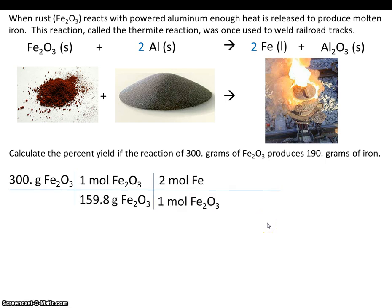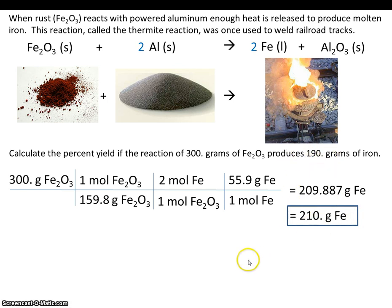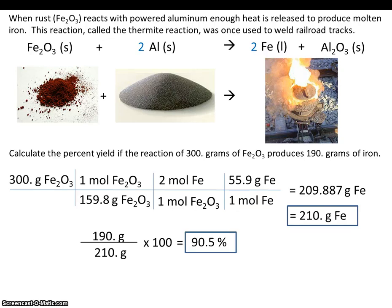Use 300 grams of rust as your given and complete the stoichiometry problem as usual. The number you come up with should have three sig figs, and this is theoretically how many grams of iron you can make if everything goes according to plan. But things don't always go according to plan — instead of making 210 grams, we only made 190. So let's do actual divided by theoretical times 100, and we'll see that our percent yield for this thermite reaction was 90.5%.